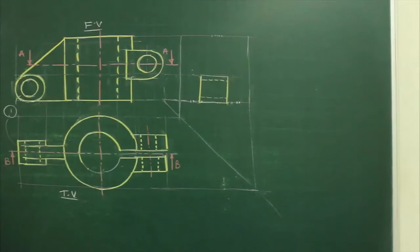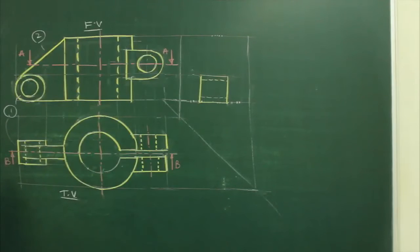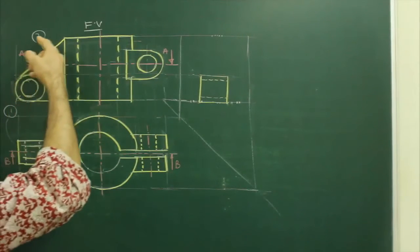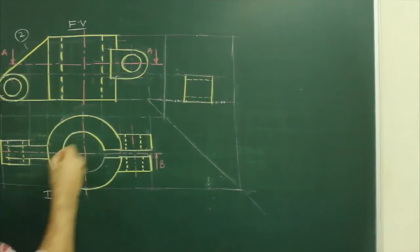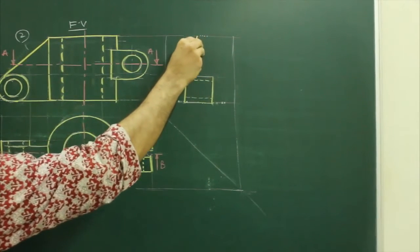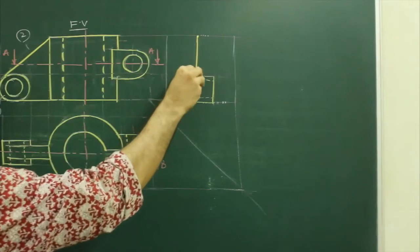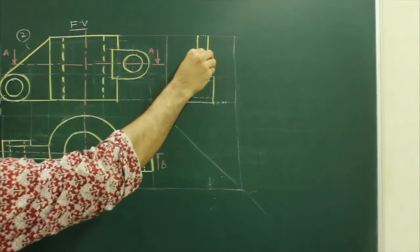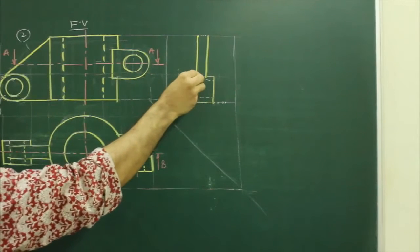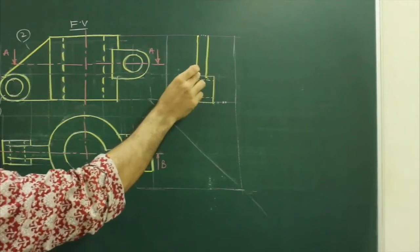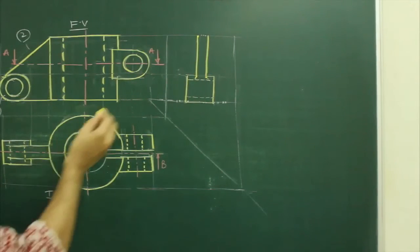After that, if you see, there is a slope which is a rectangle in the top view. So when you project from here and project from here, you get a rectangle like this, and it will be till here. We need to show a tangent over here in this part, so it will be like this, and the upper part will be done.